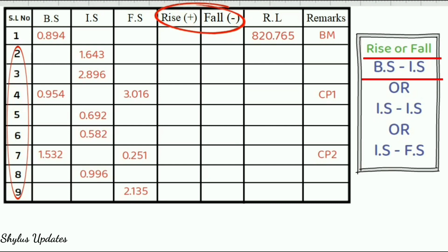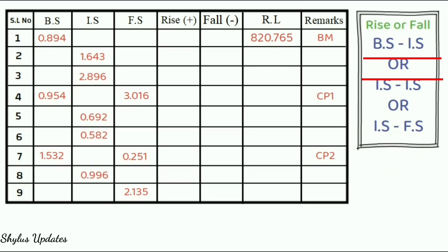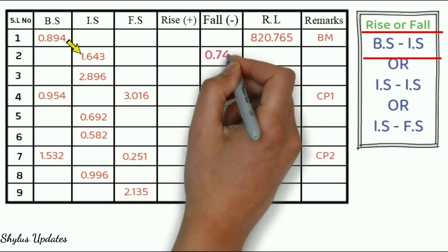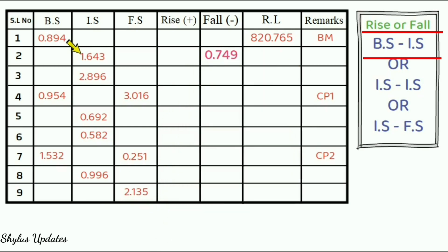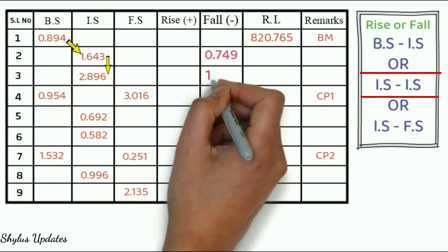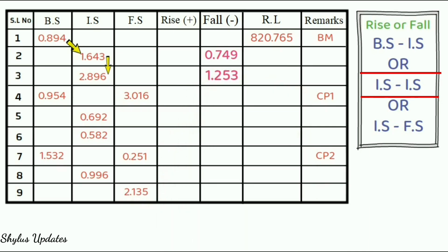Use first formula BS minus IS. BS means back sight. IS means intermediate sight. Subtract 0.894 minus 1.643. You will get minus 0.749, which is negative. So, it should be entered in fall column. Next, use second formula IS minus IS. Subtract 1.643 minus 2.896. You will get minus 1.253, which is negative. So, enter in fall column.